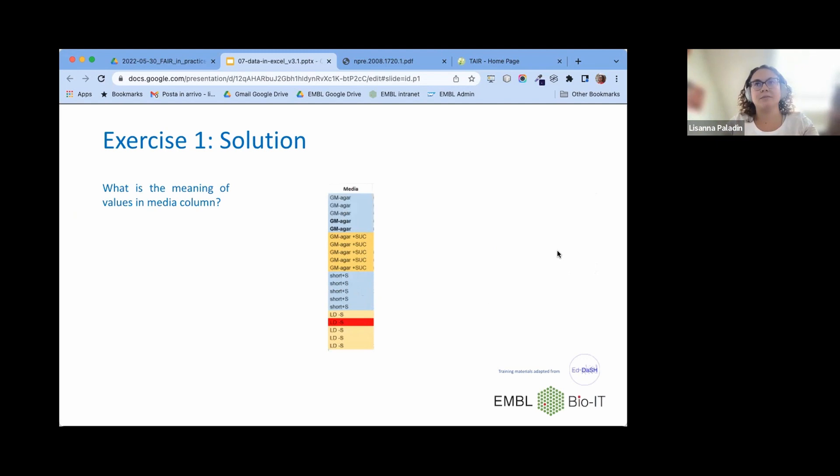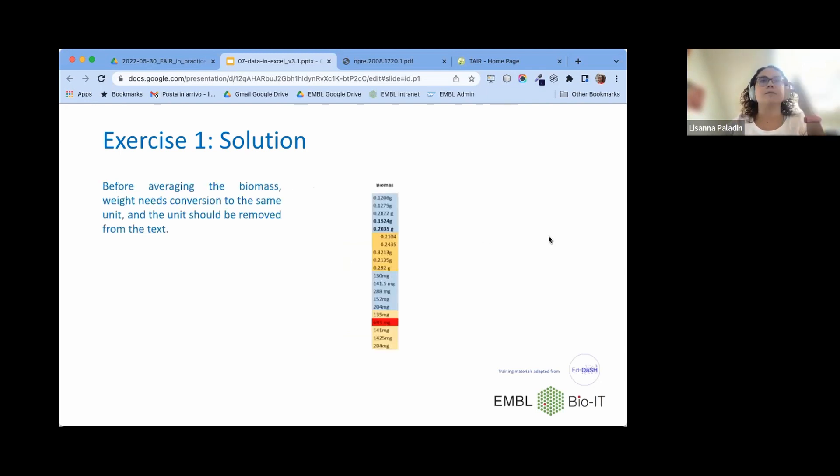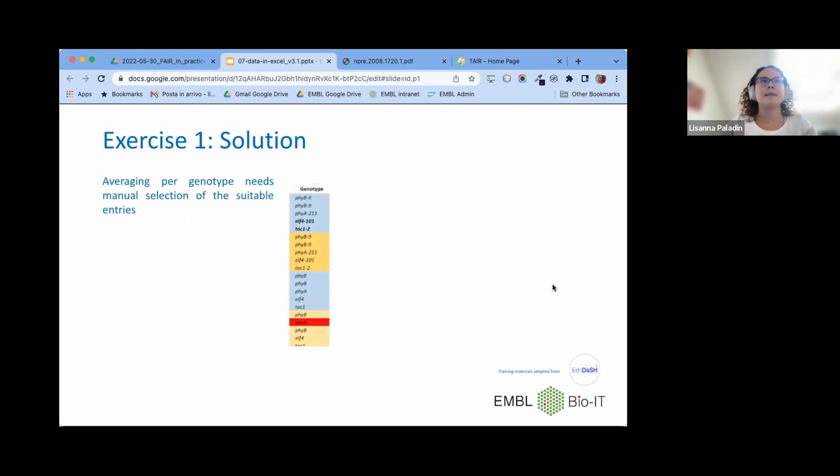Listing them not with the same format might cause problems. Does plus s mean the same thing as plus suc? We don't know. Are genotypes the same in different blocks here and there? Before averaging the biomass, we would need conversion between this format and this format. So the numerical one only, the G with the space and the G without. And then we also have milligrams here.